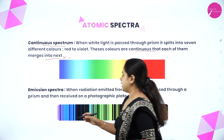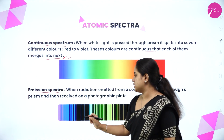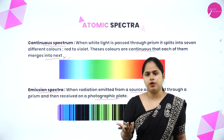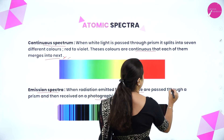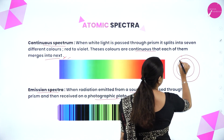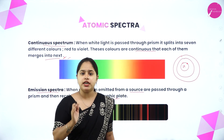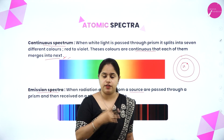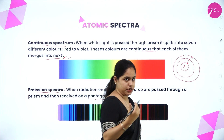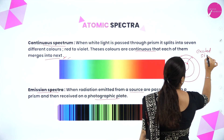Now moving on to the next type of spectrum — emission spectrum. When radiation emitted from a source is passed through a prism and then received on a photographic plate, you obtain emission spectrum. Let's take the example of hydrogen atom. There is a positively charged nucleus, and only one electron is present. The electron absorbs the energy given to the atom and moves to excited energy states — these higher levels are called excited states. The energy level from which it has jumped is called the ground state.